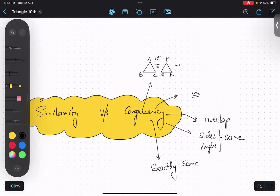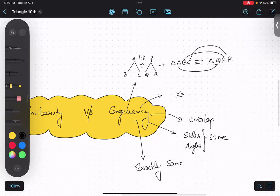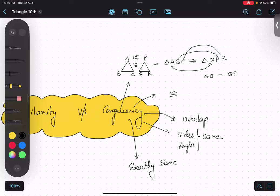So in this case, triangle a, b, c is congruent to triangle q, p, r. Now remember, this a is congruent to q, like corresponding parts. b is corresponding to p and c is corresponding to r. So in this case, a, b will be equals to q, p.